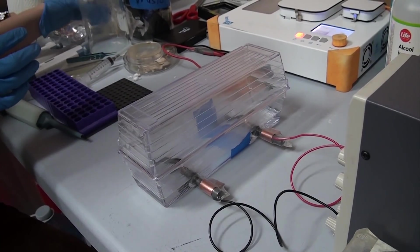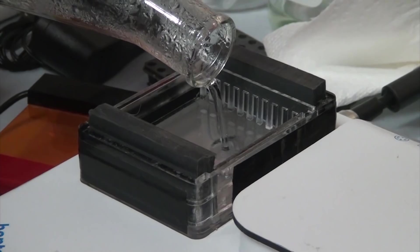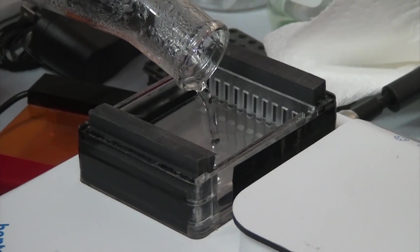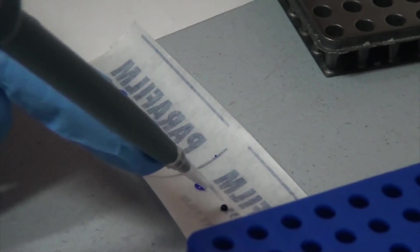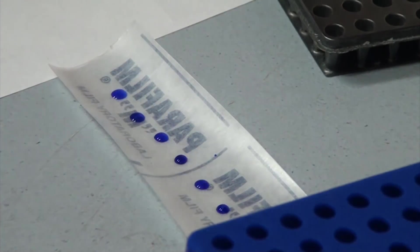You'll also need a power supply to provide the voltage to that box. Then you'll need a casting tray and comb, which is what you use to prepare the gel before you transfer it to the gel box. And finally, you'll need a collection of reagents to prepare your sample and also to act as a control.